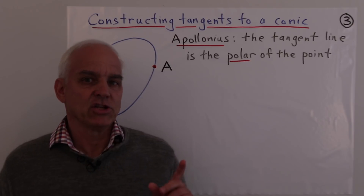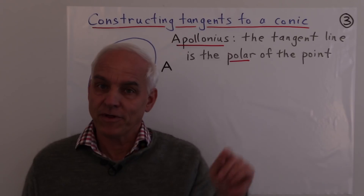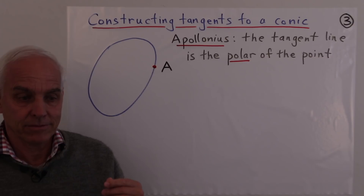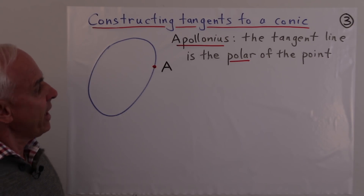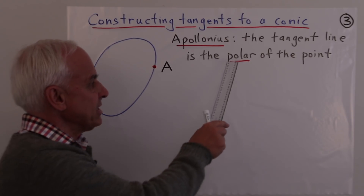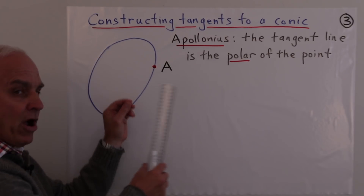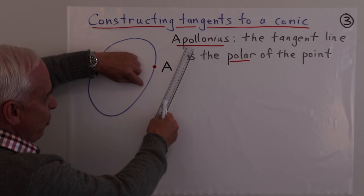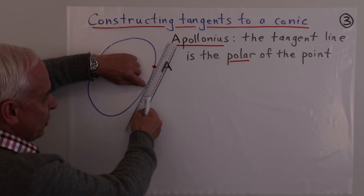The problem of finding tangents actually goes back to the ancient Greeks. In particular, Apollonius was well aware of the importance of tangents to a conic, and he was in possession of constructions of tangents. One particularly interesting approach is through this idea of polarity — that to a conic, we can associate a correspondence between points and lines such that as a point approaches the curve, the corresponding line approaches the tangent to the curve at that point.